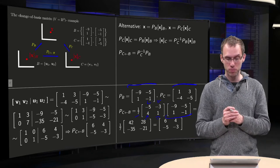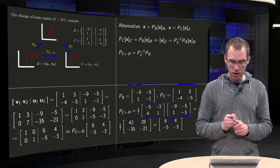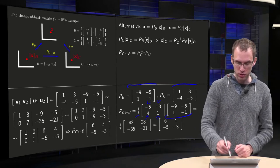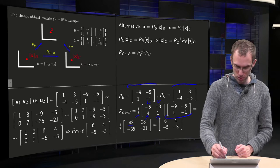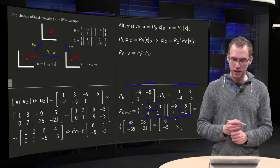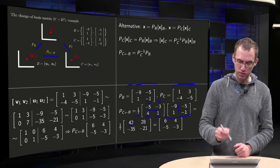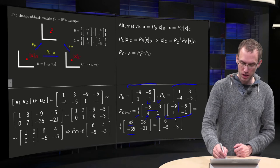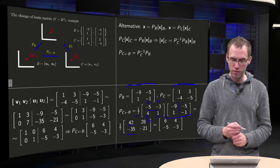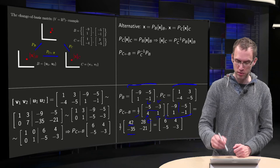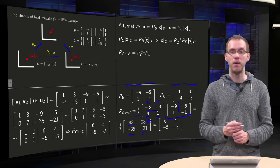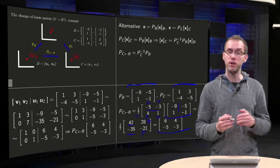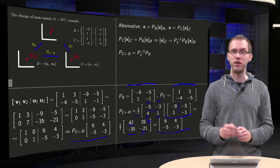And then we just have to compute this matrix product. So we get a 1 over 7 times, let's see, 45 minus 3 equals 42, using row column rule. And then a minus 36 plus 1 minus 35 over here. And then we go on, 25 plus 3 equals 28 over there. And 4 times minus 5 minus 20 plus 1 times minus 1 minus 21 over here. And then after you have divided by 7, you get your P from B to C, which is of course the same as the one we had over here.